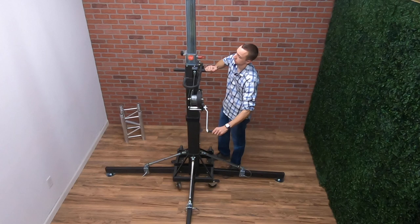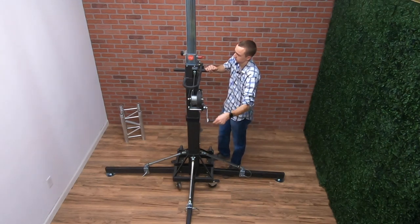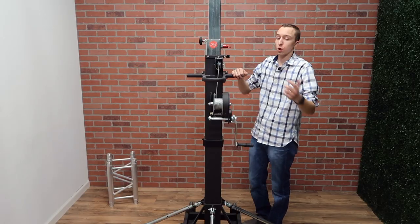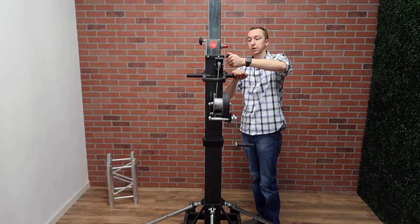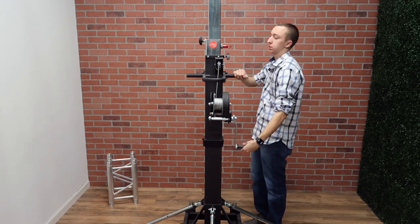We have the last section which also has a tightening knob here, so just make sure that's loose so it's not grabbing the pole. Rotate the back pin 90 degrees.